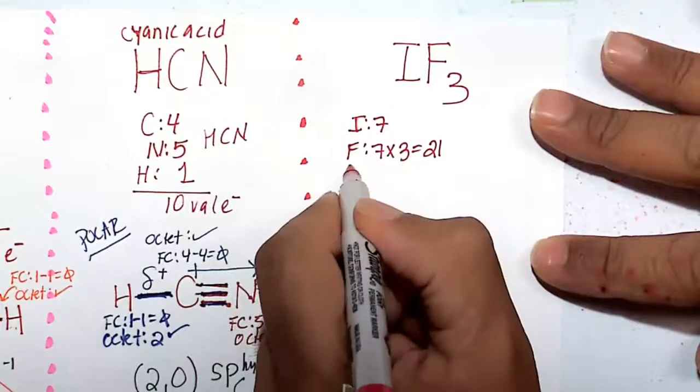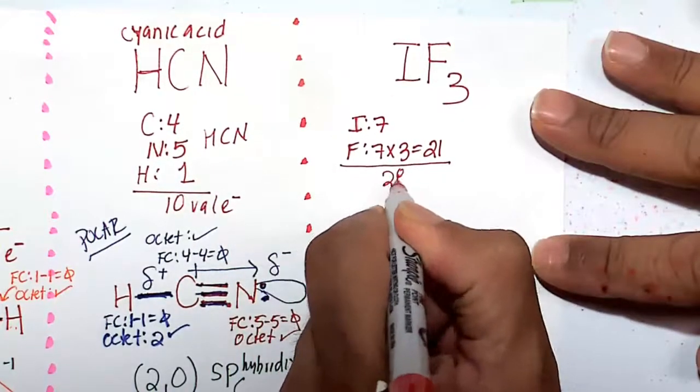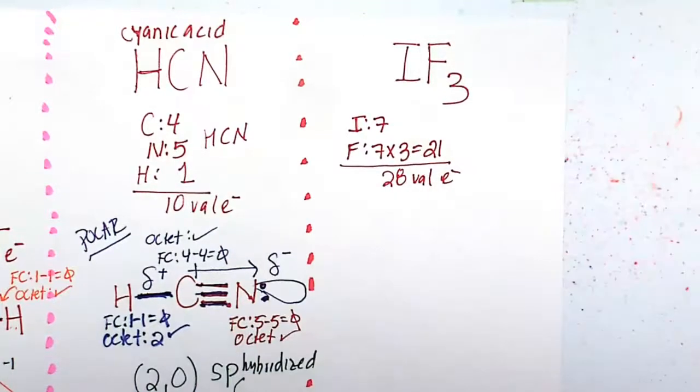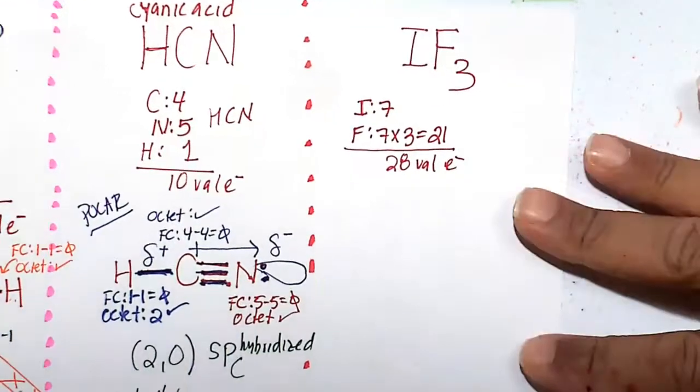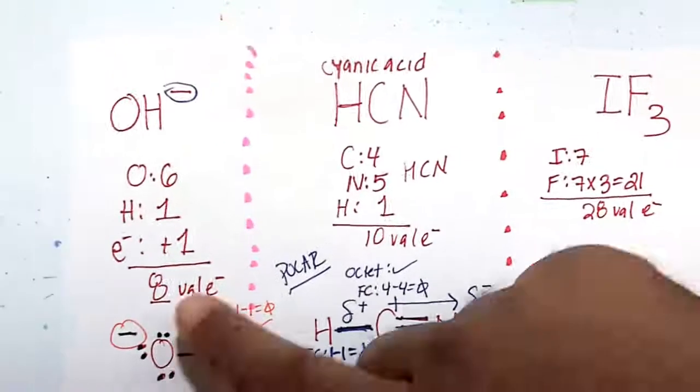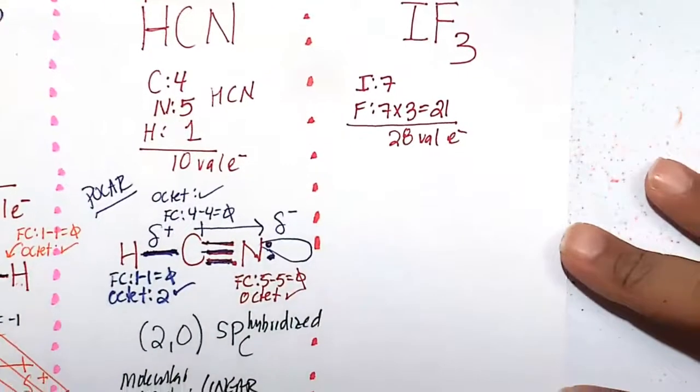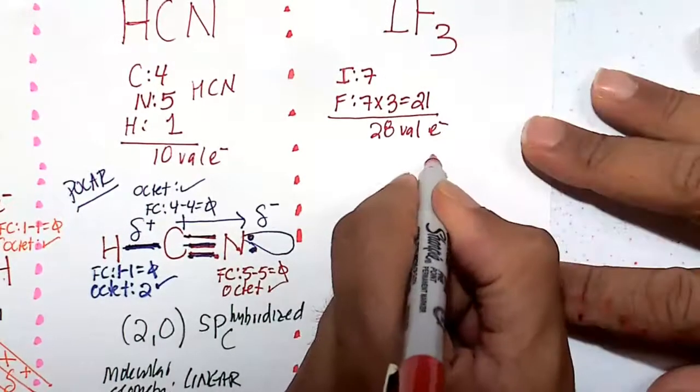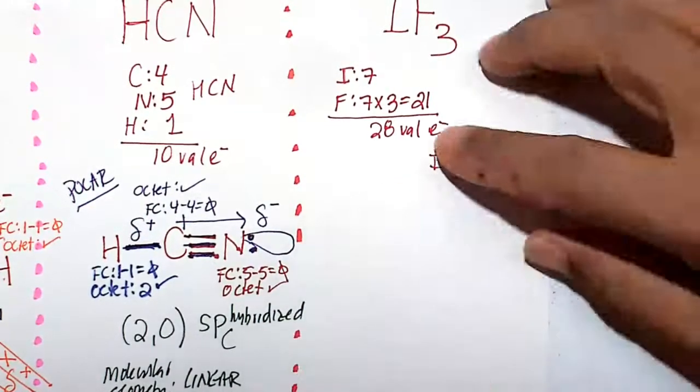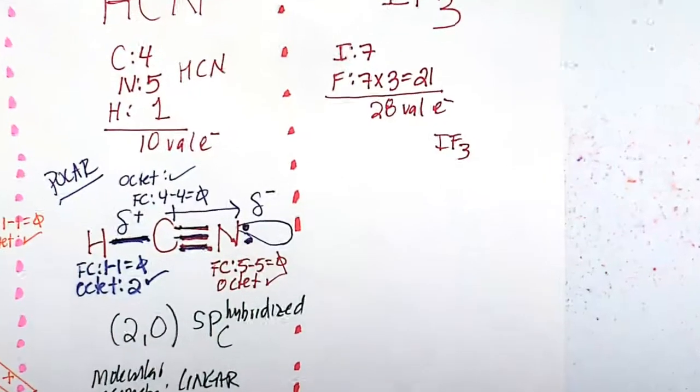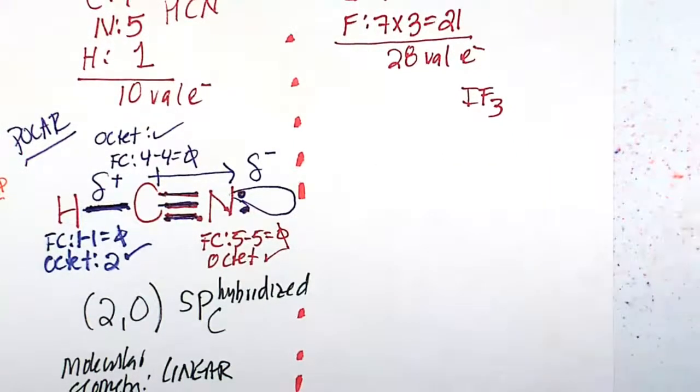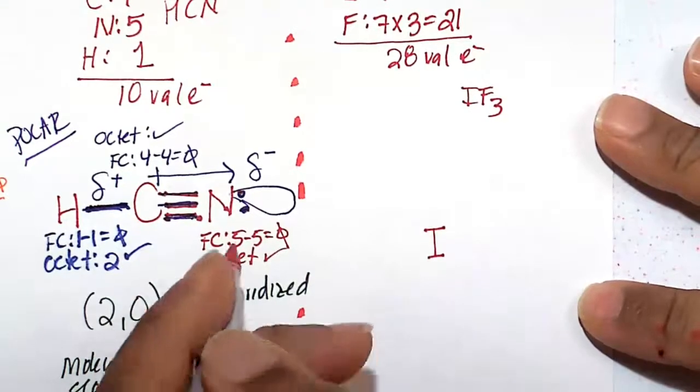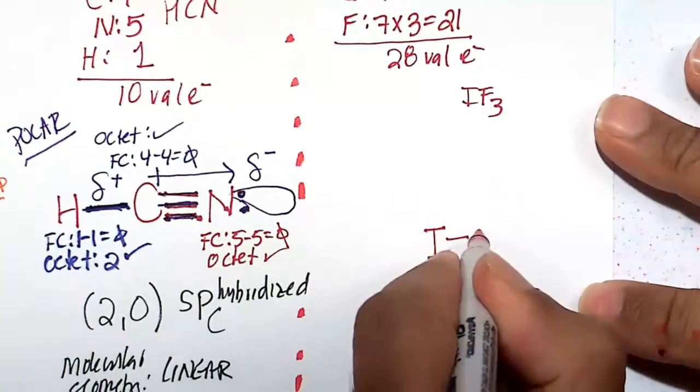So 7 plus 21, our goal is to get 28 valence electrons around iodine trifluoride, a covalent molecule with non-metals bound to non-metals. I'm going to make iodine my central atom since I don't know which of the 3 fluorines would be the best candidate for that distinction. Let's arrange this in one dimension: I plus 3 fluorines.